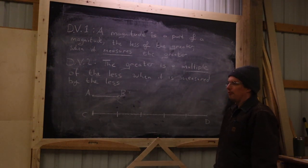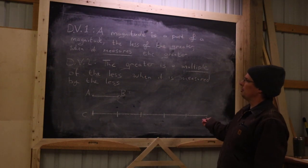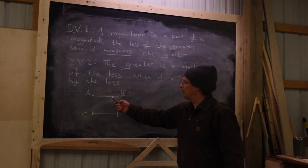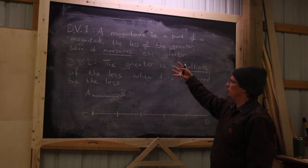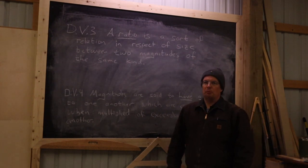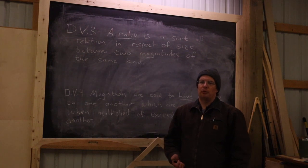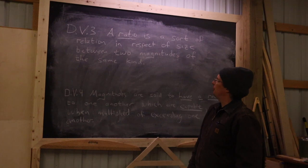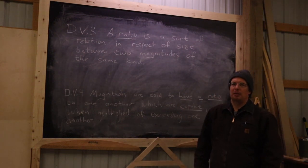The second definition from Book Five elaborates on this concept: the greater is a multiple of the less when it is measured by the less. These are just two sides of the same coin. Euclid then moves along with two more definitions, which really begin to establish what he means by ratio.